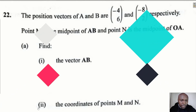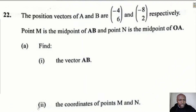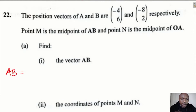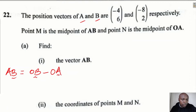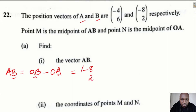In Part A, we need to find vector AB. Position vectors are vectors that come from the origin — they have reference from the origin, which is point O at (0, 0). To get vector AB, we take vector OB and subtract vector OA. Vector OB is the position vector of B, which is (-8, 2).